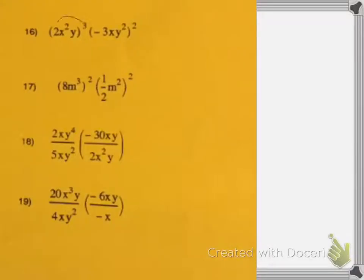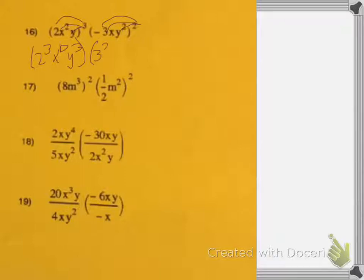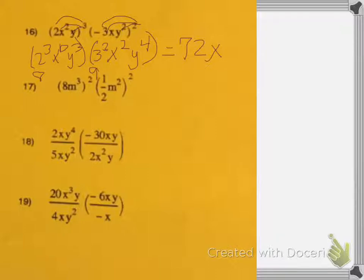Number 16. You're going to first distribute to everything, so you're going to get 2 to the 3rd, x to the 6th (because 3 times 2 is 6), y to the 3rd. Then you're going to distribute to everything again. Since 2 is even, that becomes a positive 3, so 3 squared. Then 2 times 1 is 2, y to the 4th (2 times 2 is 4). Then we're going to multiply across and add our exponents. 2 to the 3rd is 8, and 3 squared is 9, so 8 times 9 is 72. Then x to the 6th times x squared gives x to the 8th (6 plus 2). And y to the 3rd times y to the 4th: 3 plus 4 is 7.